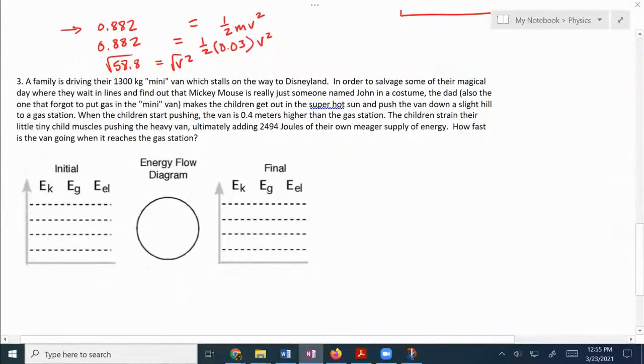Last one. We have a family is driving their 1300 kilogram minivan which stalls on the way to Disneyland. In order to salvage some of the magical day where they wait in lines and find out that Mickey mouse is really just someone named John in a costume, the dad, also the one that forgot to put gas in the minivan, makes the children get out in the super hot sun and push the van down a slight hill to the gas station. When the children start pushing, the van is 0.4 meters higher than the gas station. So that tells us it's going to have a little bit of gravitational energy. The children strain their tiny little child muscles, pushing the heavy van, ultimately adding 2,494 joules of their own meager supply of energy. How fast is the van going when it reaches the gas station?